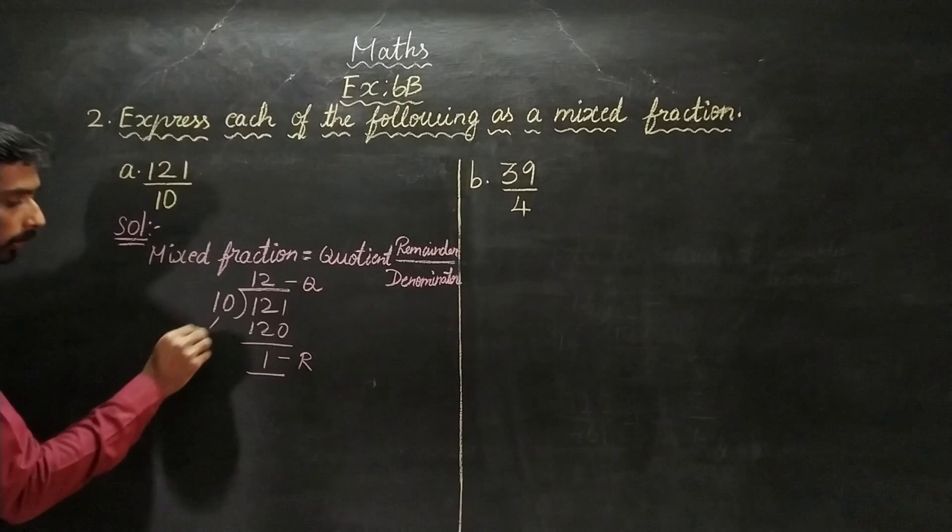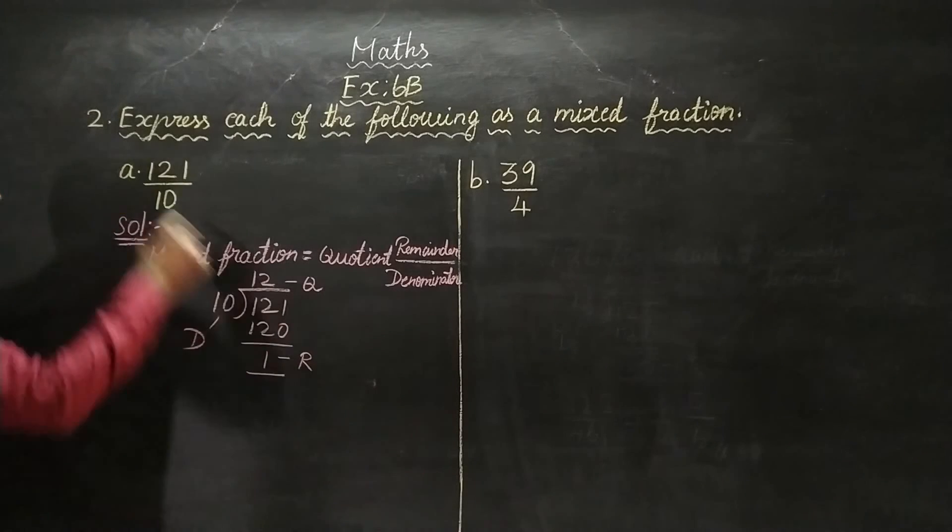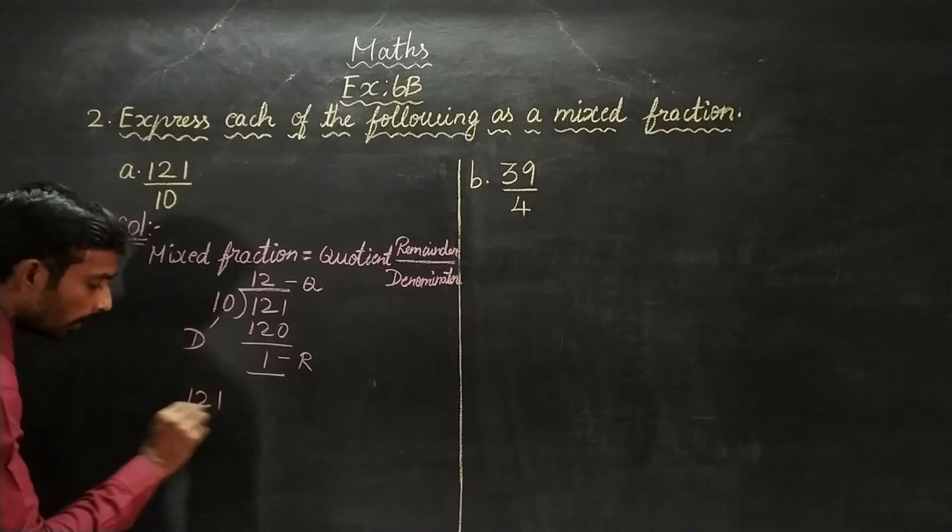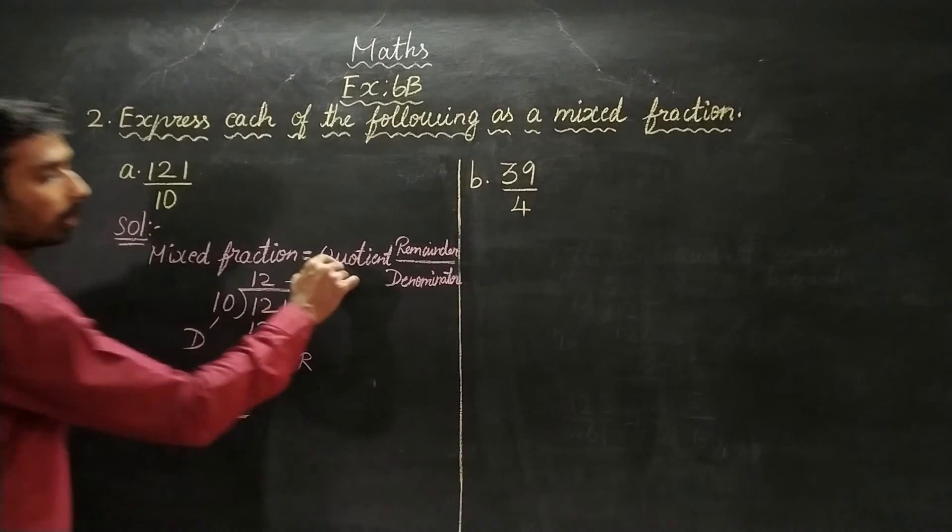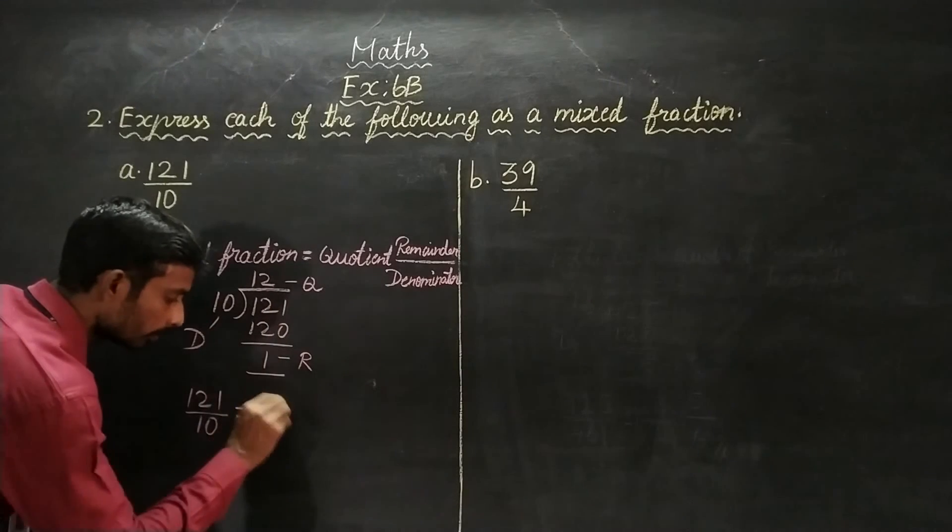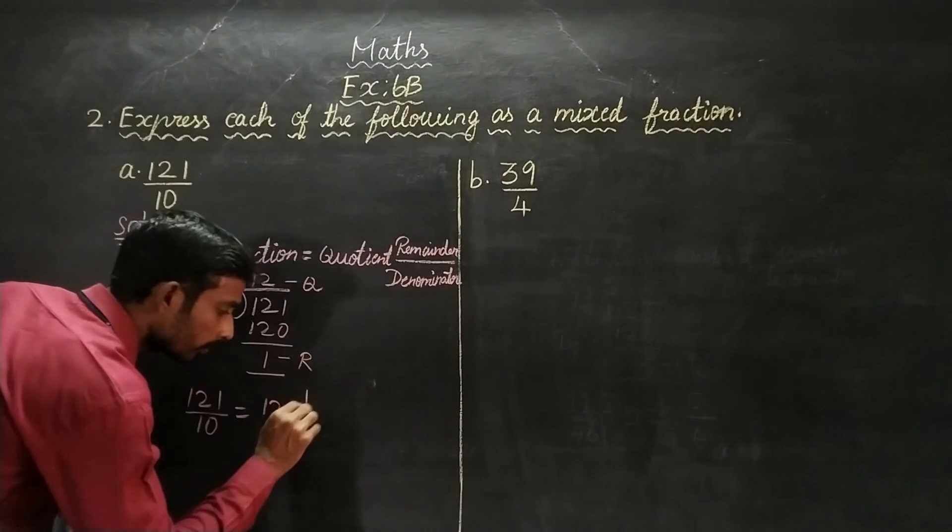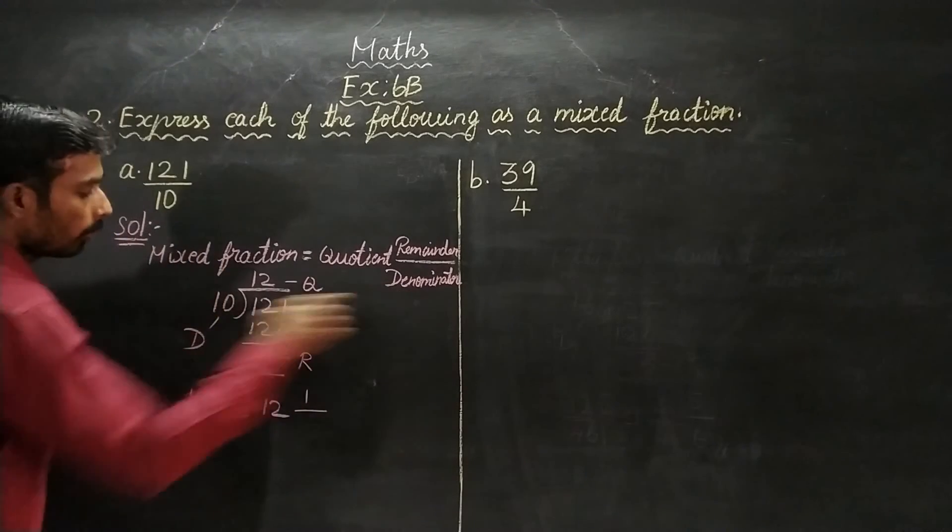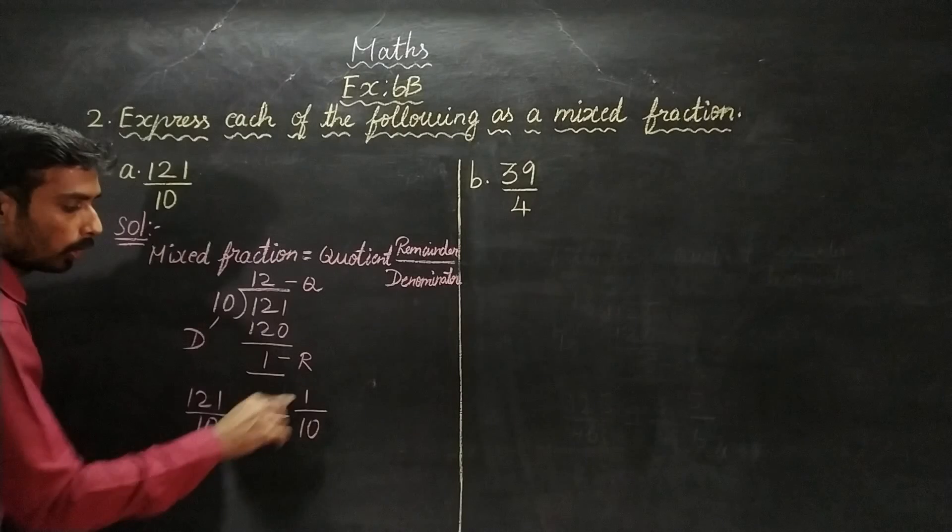Quotient, divisor, denominator 10. So we can see 121 by 10 improper fraction becomes this mixed fraction. Here the quotient value is 12, remainder is 1, denominator is 10. Verification: 12 times 10 is 120, plus 1 equals 121.